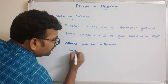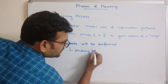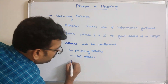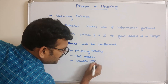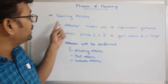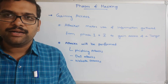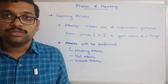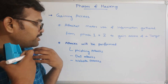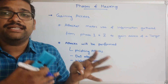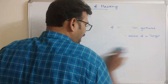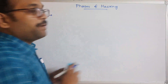The attacks performed in this phase can include phishing attacks, denial of service attacks, web or website attacks, and more. Once the attacker gains access to the target, the work is not yet complete — the attacker also has to maintain that access for further exploitation and to continue performing activities.